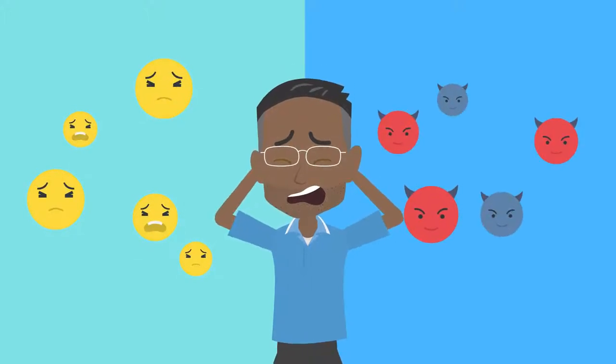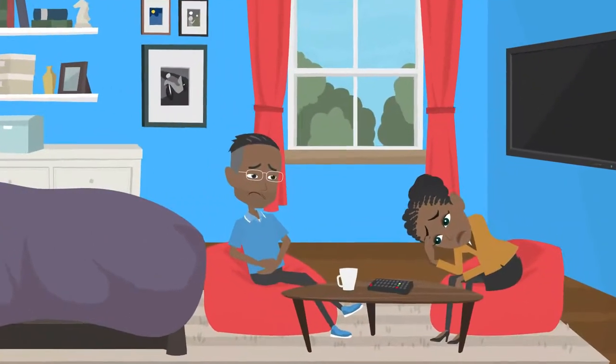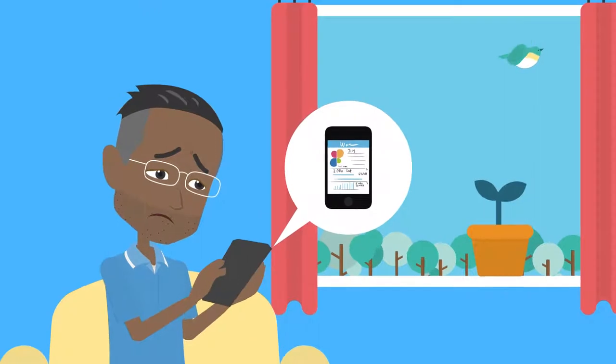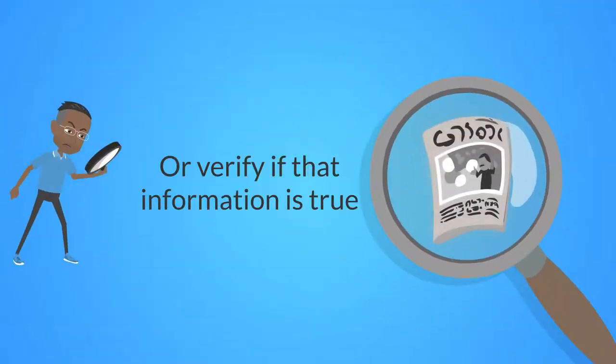Intense emotions like fear or anger can cause us to react impulsively. So when we see posts about COVID-19 that make us feel angry or afraid, we are more likely to react by commenting or sharing that information without pausing to consider the source or verify if that information is true.